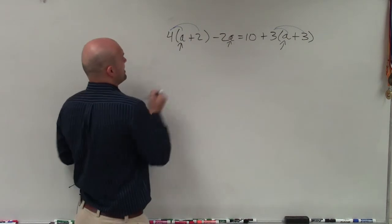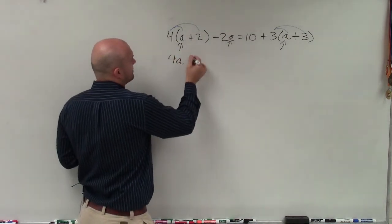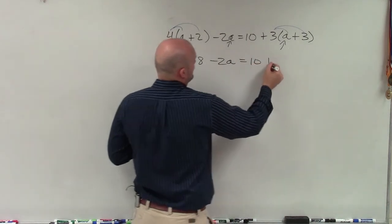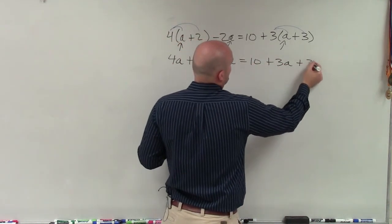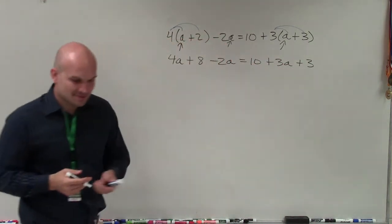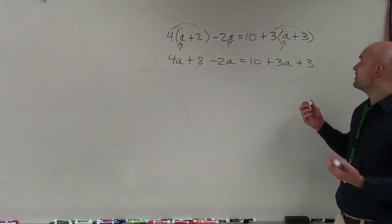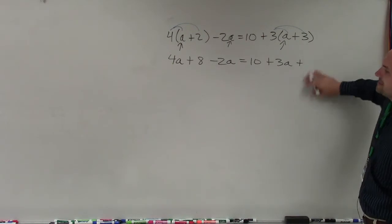So by applying distributive property, I have 4a plus 8 minus 2a equals 10 plus 3a plus 3. Now, a lot of times, ladies and gentlemen, it's not as obvious. Is it probably 9? It is 9. That's my second mistake today.